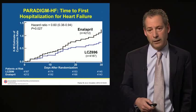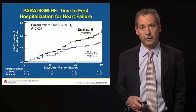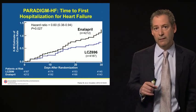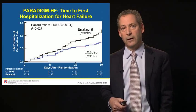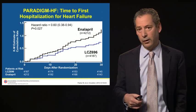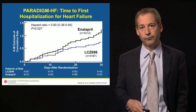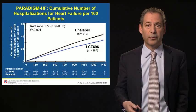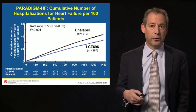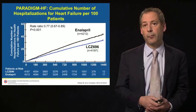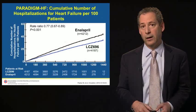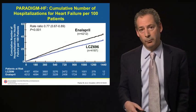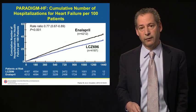The benefit of LCZ-696 was apparent very early in the course of the trial. Even by 30 days following randomization, there was a significant risk reduction with a significant p-value — this drug appears to work very early after initiation. Not only did we reduce cardiovascular death and all-cause mortality, but we also reduced the number of hospitalizations. The rate ratio of total hospitalizations was reduced by 23% in patients taking LCZ-696 compared to those taking Enalapril — again, a very significant benefit.